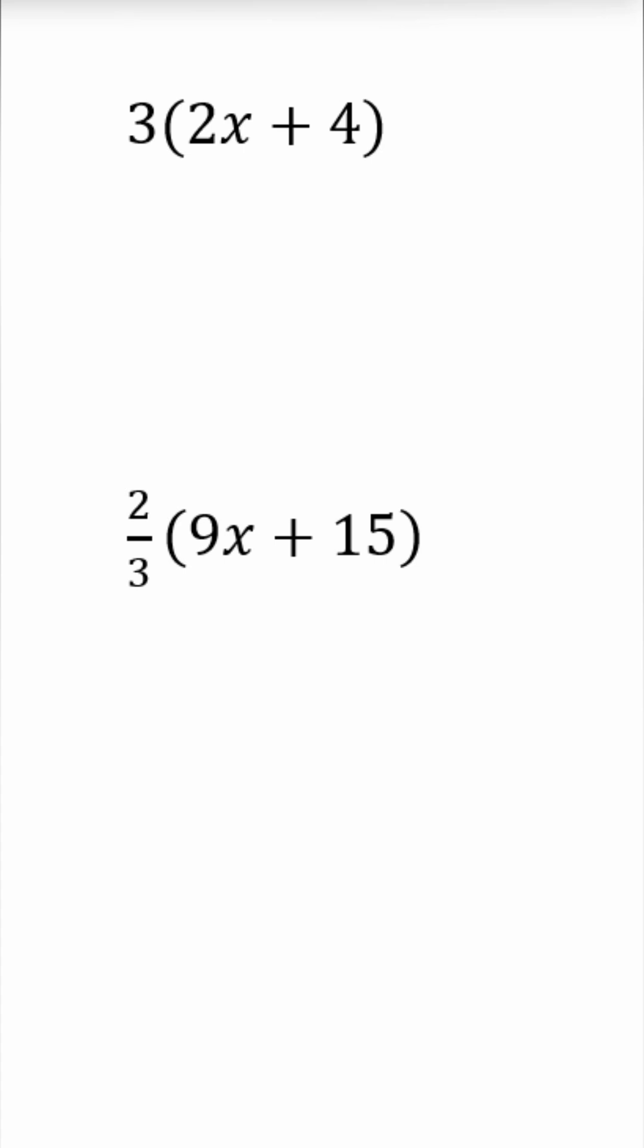Let's use the distributive property to simplify our expressions. We've got 3 times the quantity 2x plus 4, so I'm going to distribute the 3 in the parentheses, multiply 3 times 2x, and 3 times 4.